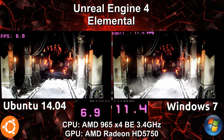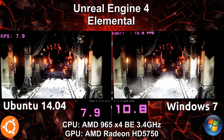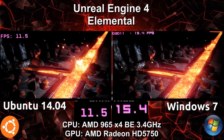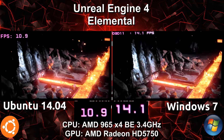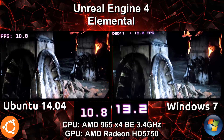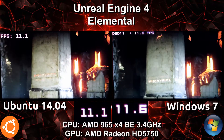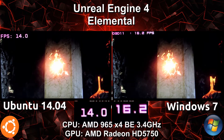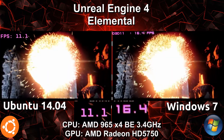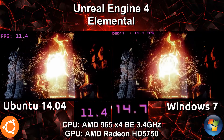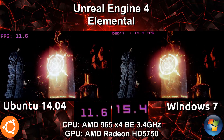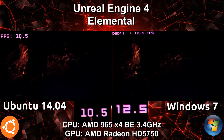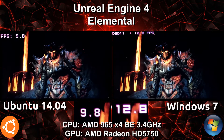Rather similarly to the Nvidia video, we are seeing less performance on the Ubuntu side but not by that much. Surprisingly, Windows 7 is definitely not as good as Windows 8 in terms of performance, especially when it hangs and has constant microstutters — very annoying.